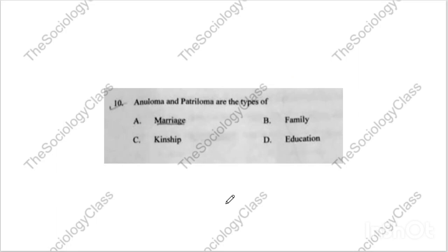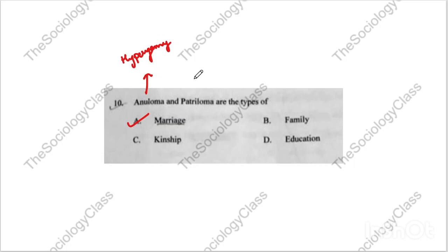Question ten: 'Anuloma and Pratiloma are types of what?' — marriage, family, kinship, or education? The correct answer is A — marriage. Please remember: Anuloma is called hypergamy, and Pratiloma is your hypogamy. I will not repeat the meaning since I have already explained it in this playlist.